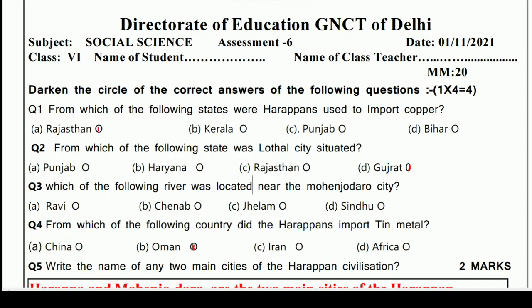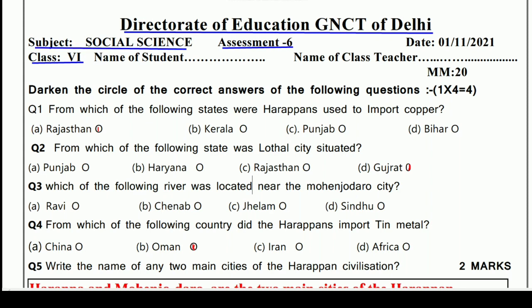Hello and welcome to Lavneesh Sharqi's class. This is Directorate of Education GNCT of Delhi's Assessment Worksheet No. 6, only for Class 6 students, taken from the subject Social Science. Today's assessment has MCQ and subjective type questions. Let's see what the questions are.